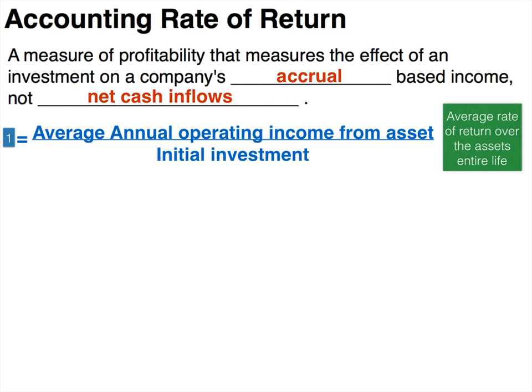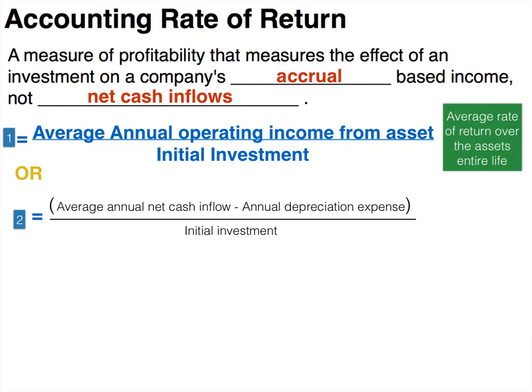The second form changes the numerator. Instead of the average annual operating income directly, we take the average annual net cash inflow and subtract the annual depreciation expense. This is just another form of the same equation, and which form you use depends on what information you're given in the exercise or problem.